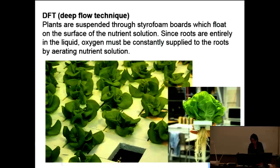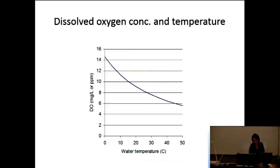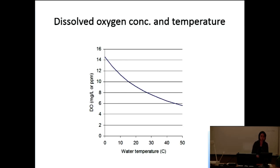You can see root health by looking at them — if they're white and looking good, you're fine. When oxygen is depleted in the nutrient solution, roots start turning brown or black. The dissolved oxygen concentration that water can hold declines with increasing temperature. If water temperature is very high, you really need to be careful. DFT systems often use insulated materials to keep temperature relatively stable.